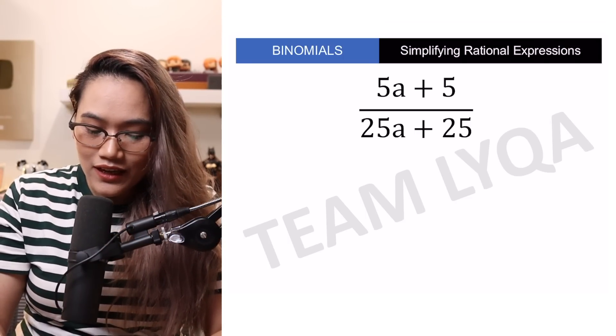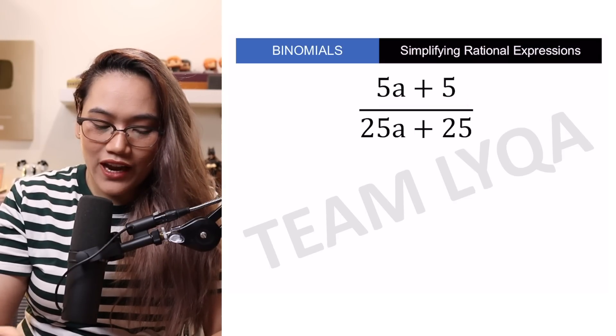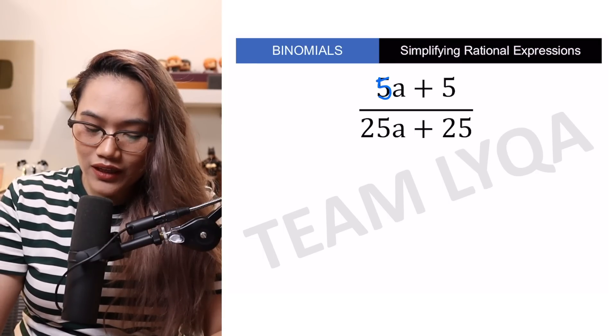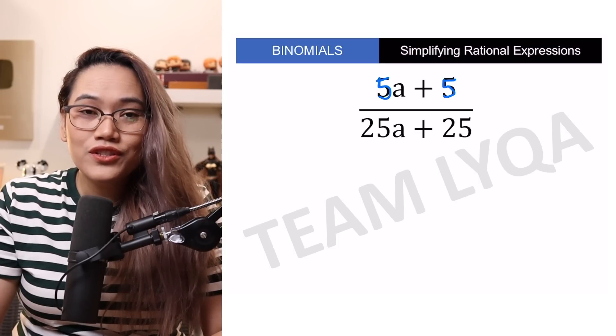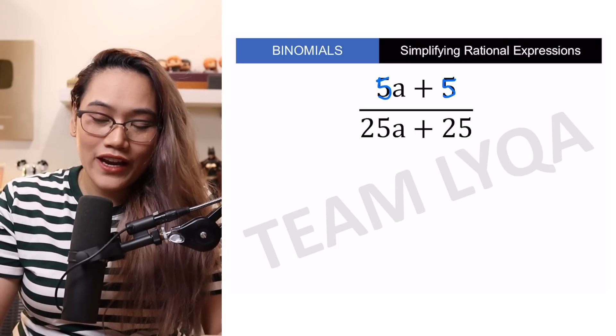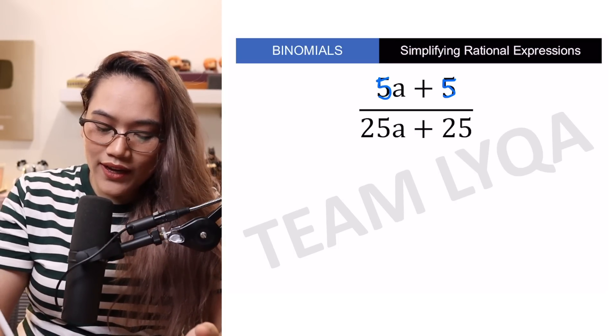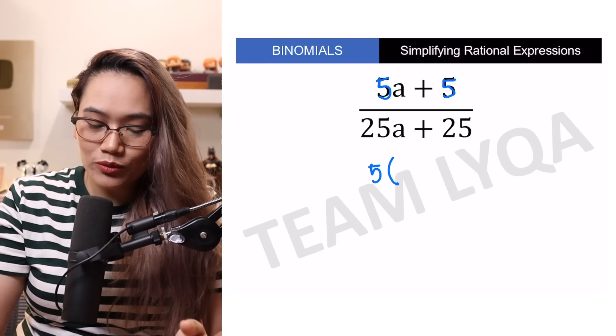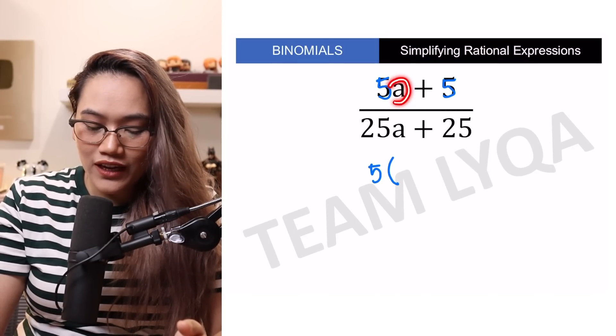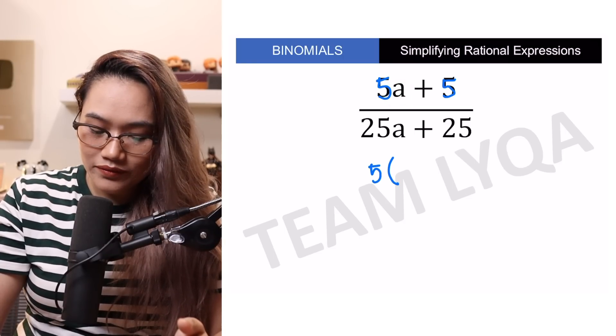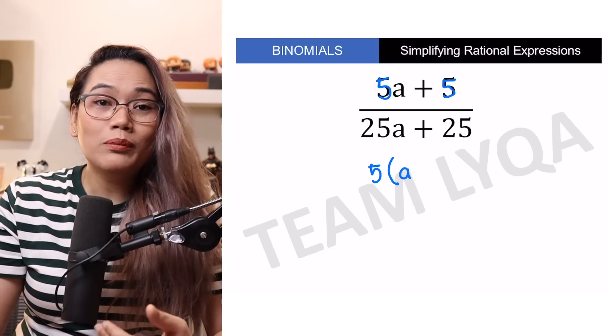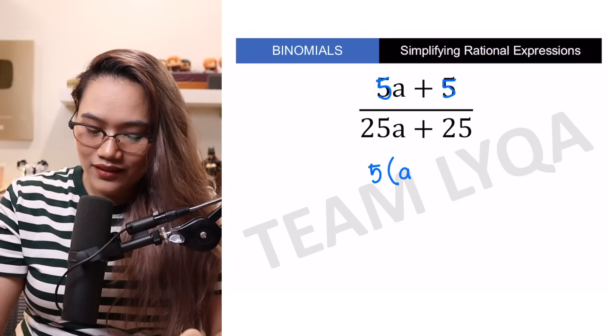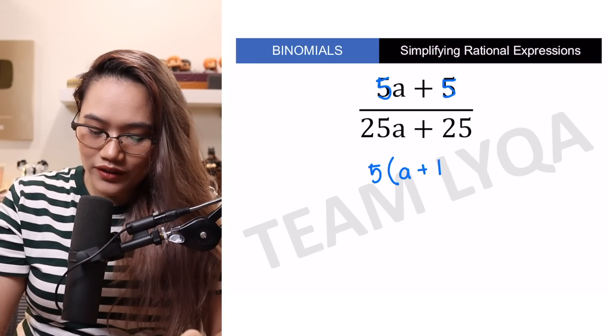Let me demonstrate that. Let's start with yung nasa taas. You have 5A plus 5. Dito, dahil merong 5 dito at meron ding 5 dito, obvious na common factor nila ang 5. So, pwede ko itong isulat as 5 times, ano ba ang minumultiply ko sa 5 para maging 5A? Eh di, syempre, yung A. Tapos, ano naman ang minumultiply ko sa 5 para maging positive 5? Eh di, 1 lang. That would be plus 1 right here.